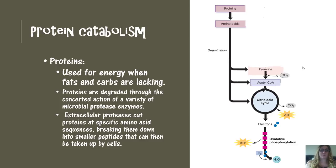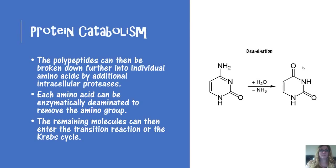What about proteins? Proteins are used for energy as a last resort — the body uses carbs first, fats as a second choice, and proteins as a last ditch effort. Proteins are degraded through protease enzymes. Extracellular proteases cut proteins at specific amino acid sequences breaking them into smaller peptides, which can then be broken down further by intracellular proteases into individual amino acids.